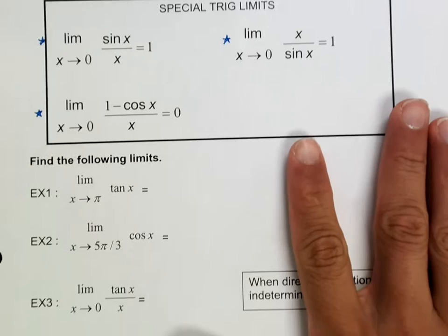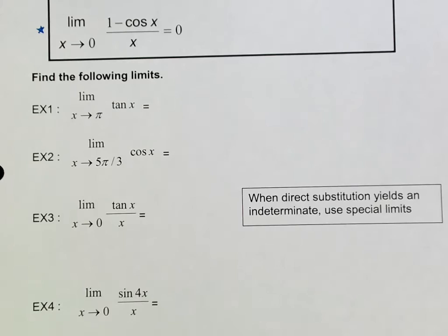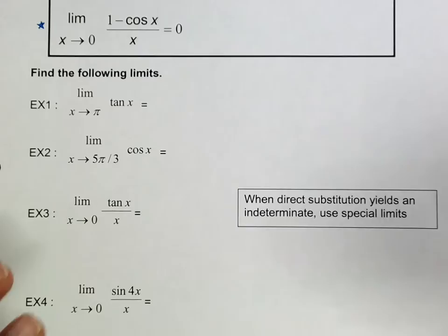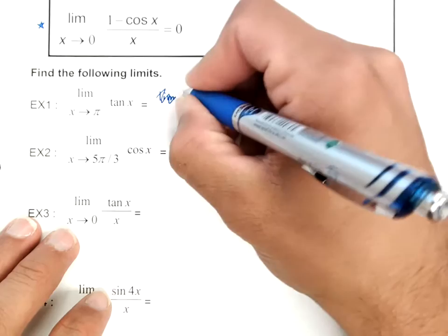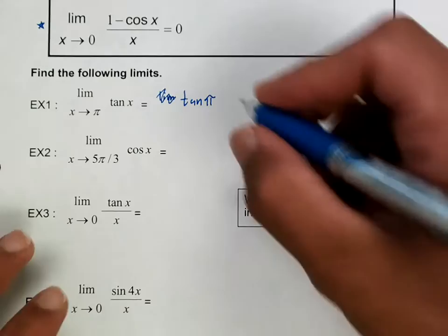We're going to start off with example one. From the last lesson, we know that the first thing you always do when trying to find a limit is to plug it in. So in this case, if we plug in π for x, this is equal to the tangent of π, and the tangent of π is zero.